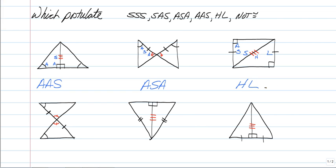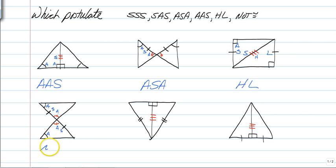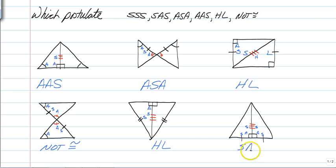The first of the second row had an angle, a side, and another angle — but the angle was far over, making it angle-angle-side. The next had an angle, a side, and another angle with the side between them — that's angle-side-angle. Another has a right triangle with an angle, a side, and a side — that's HL again. The last one has a side, an angle, and a side on both triangles — that's side-angle-side.